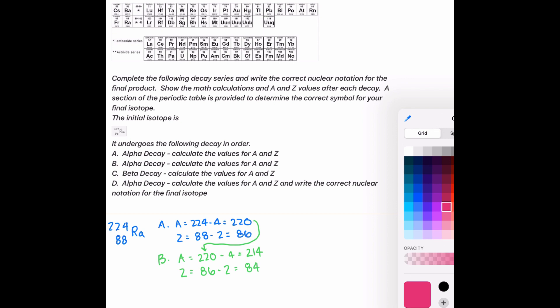Now I'm going to try and find some different colors so you can see each step. Part C is beta decay, so that's a little bit different.